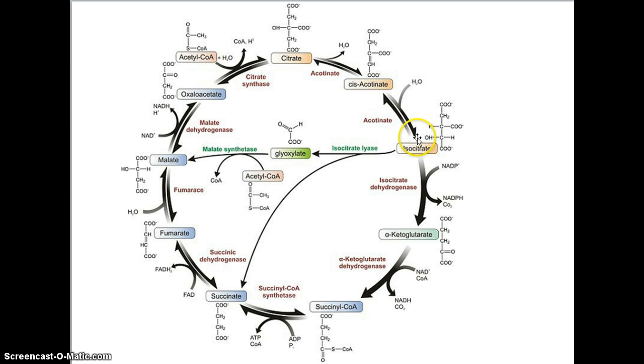So we've got aconitate. Add water, goes to isocitrate, which is our first sort of move around of the molecules here. Now I'm going to do the TCA cycle and follow up with a bit of acetyl oxalate while I'm here.